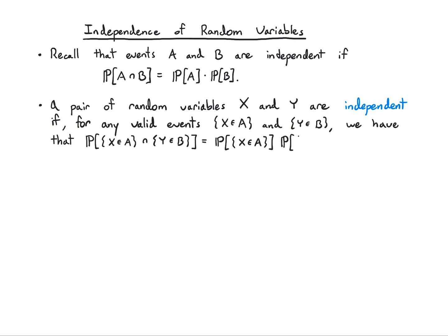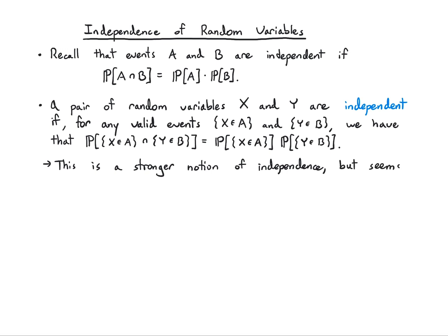So it's the same basic definition, except now what we mean by probability is just checking that X is in the set and Y is in the set. This is a stronger notion of independence because we're applying it to any possible events for a given random variable. It seems hard to check, but the good news is that there's an easier way to check.